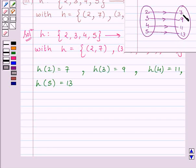Also, all the elements of set {7, 9, 11, 13} have some pre-image in the set {2, 3, 4, 5}.